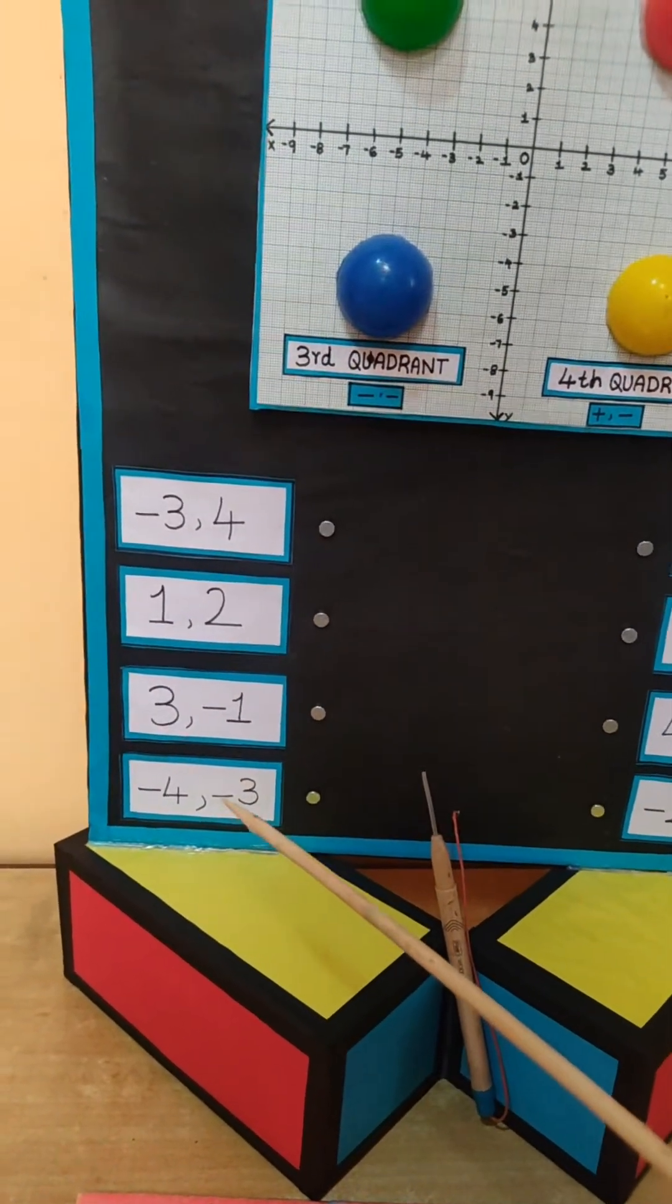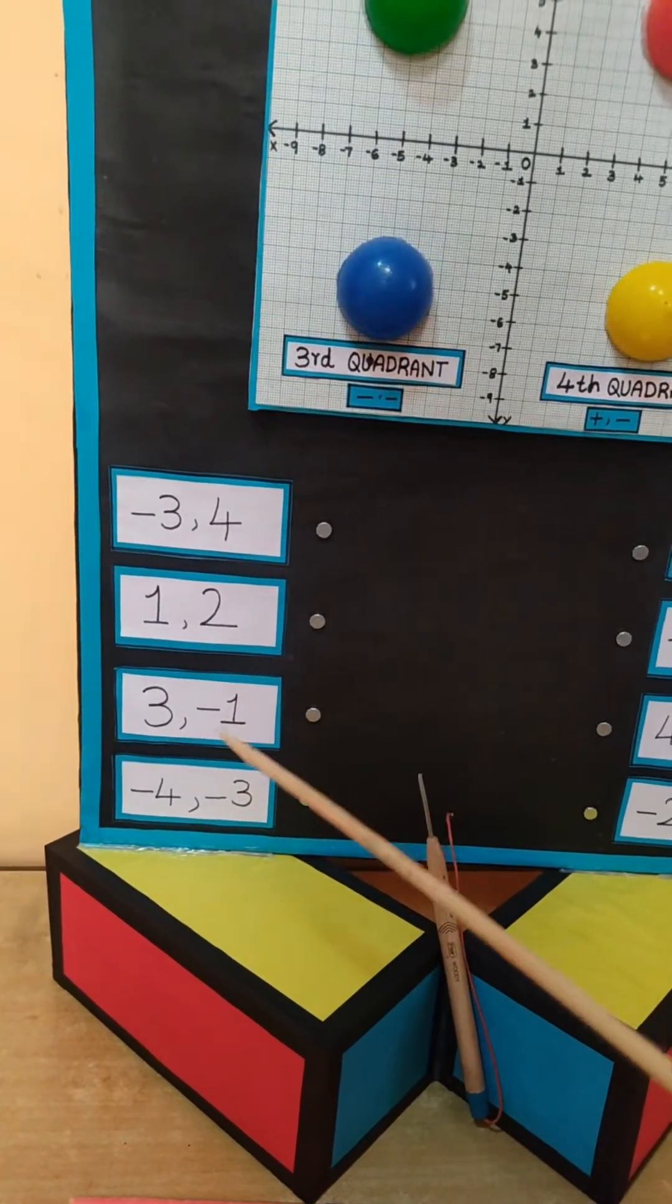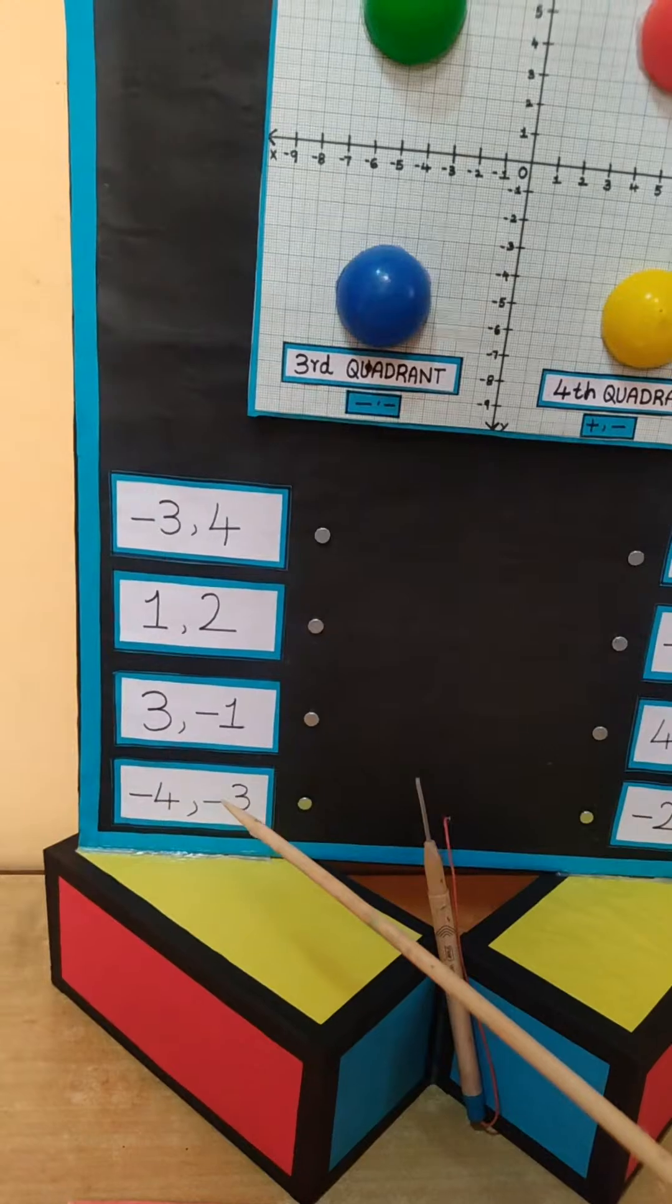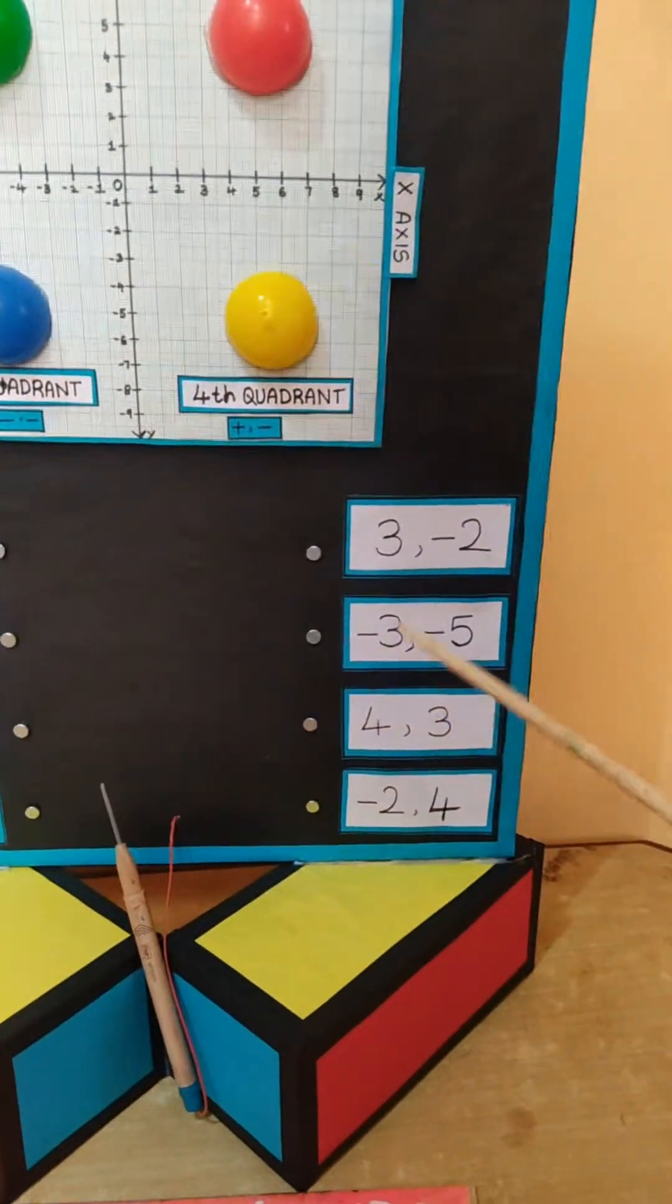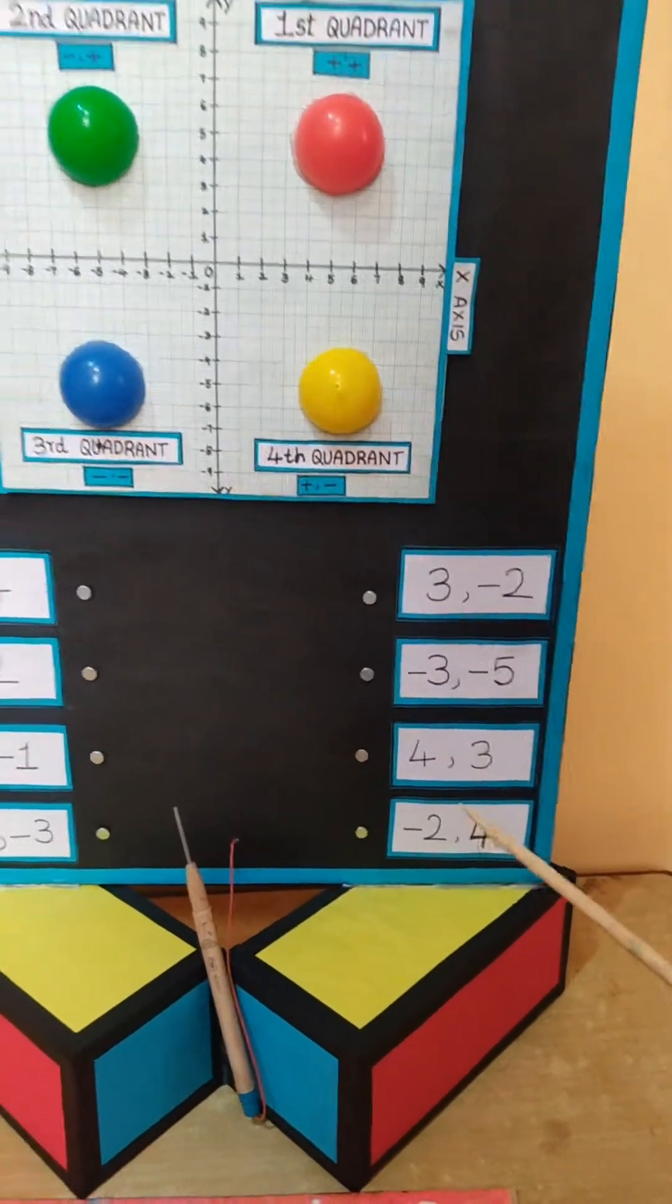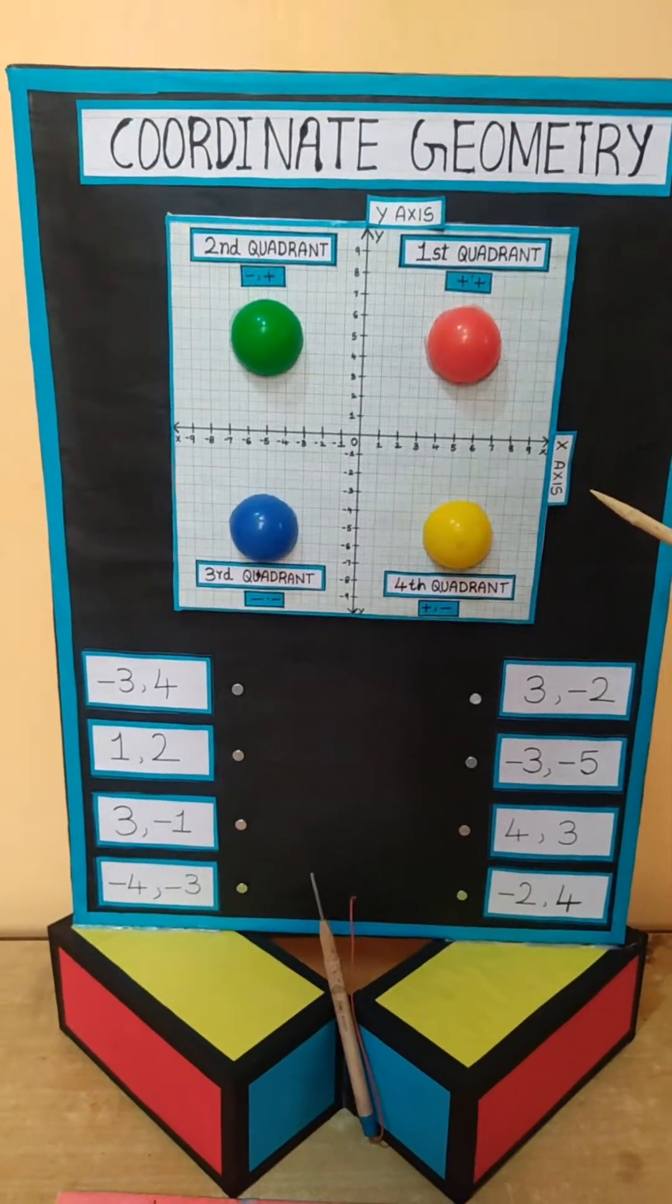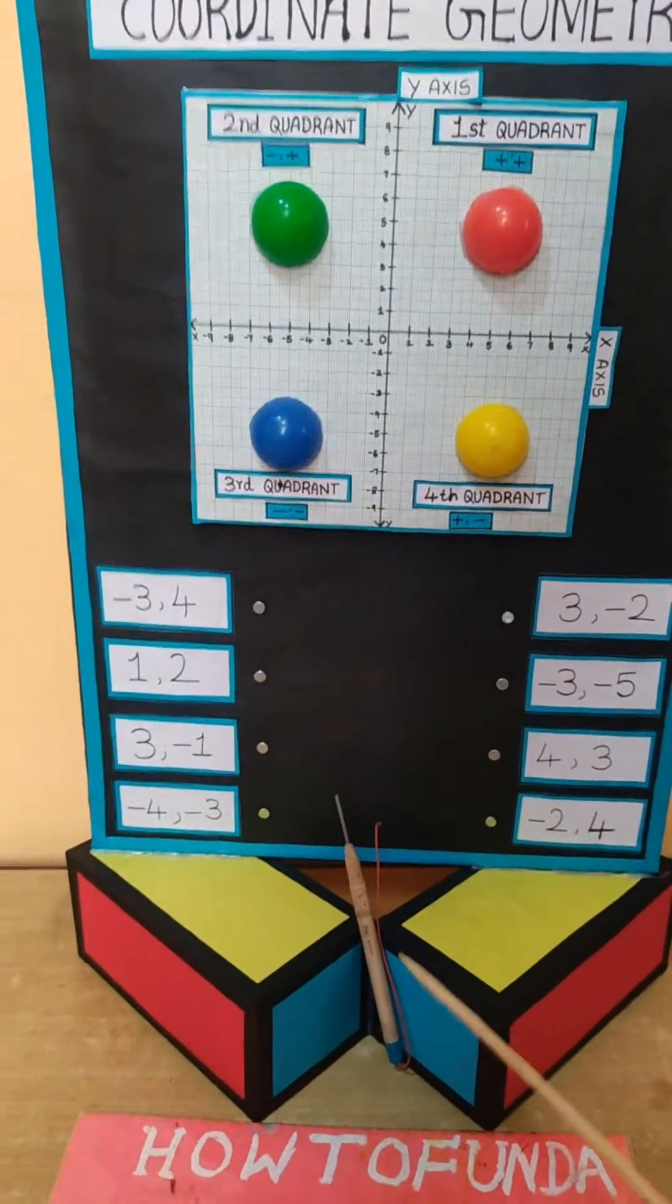Examples include minus three comma four, one and two, three and minus one, minus four minus three, and similarly three minus two, minus three minus five. Now we are arranging a circuit in the back side of this working model by making use of this probe.